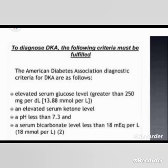To diagnose diabetic ketoacidosis, specific criteria must be met. First, there will be elevated serum glucose level more than 250 mg/dL — typically between 300 to 800 mg/dL, and in most cases above 500. Second, elevated serum ketone level is required.